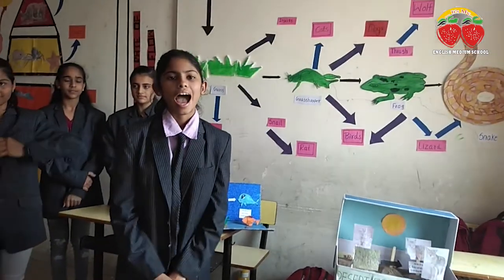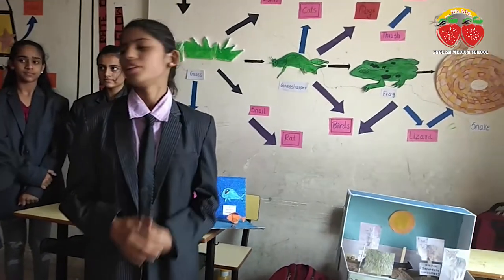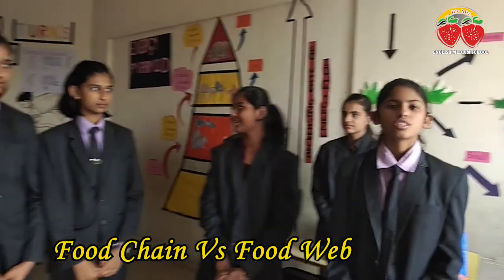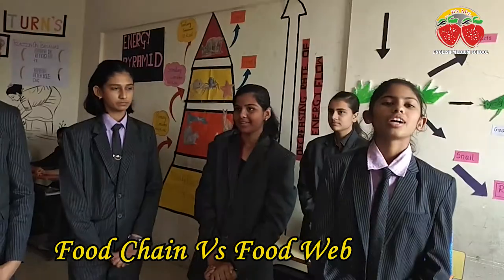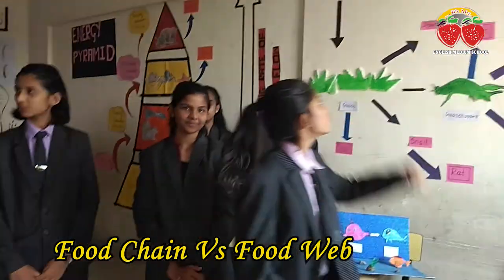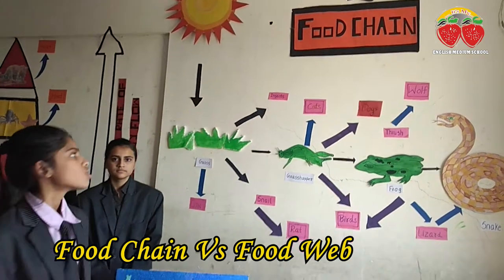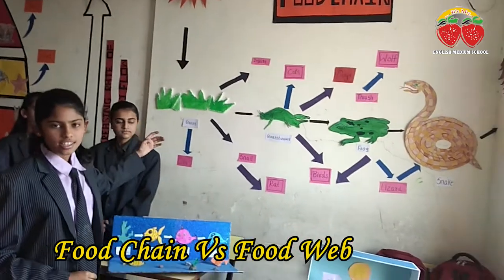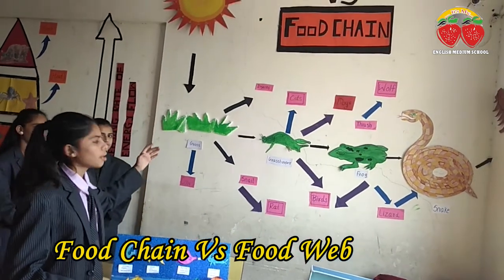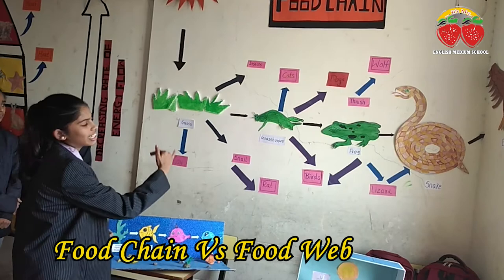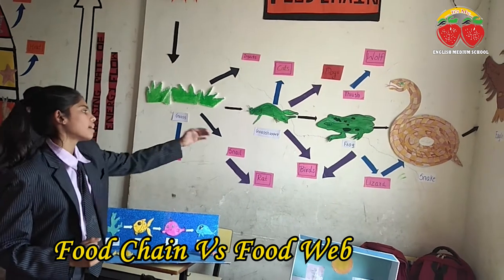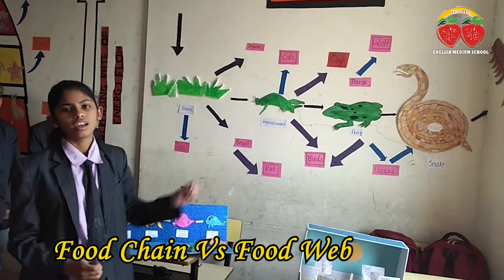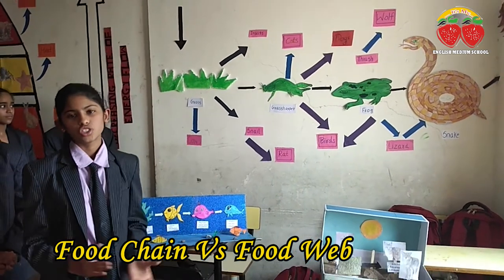Hello everyone. I am Madhura Satputu. I am Laibabi Kulkar. Now I am going to explain food web versus food chain. As the sun gives energy to the grass, grass is eaten by the grasshopper, grasshopper is eaten by the frogs, frogs by snakes, and snakes by eagles. This is a food chain.